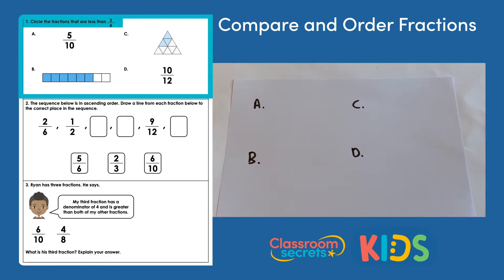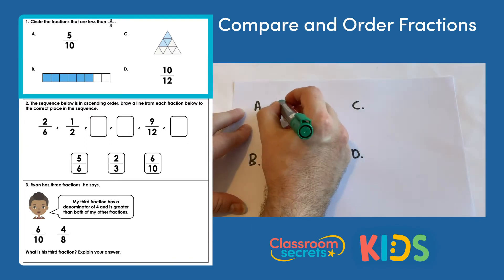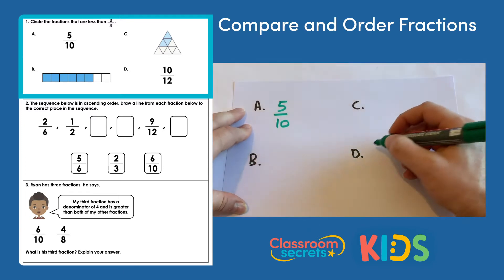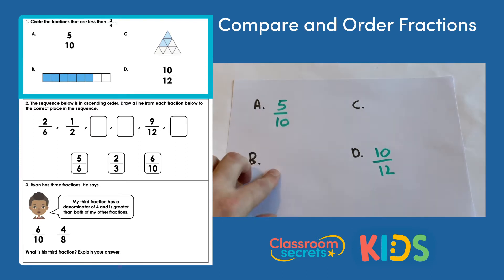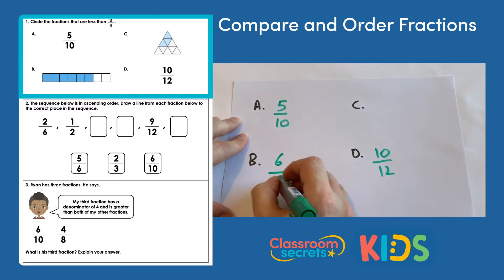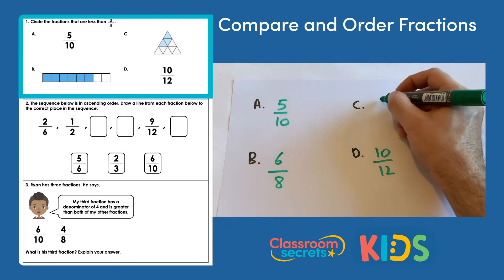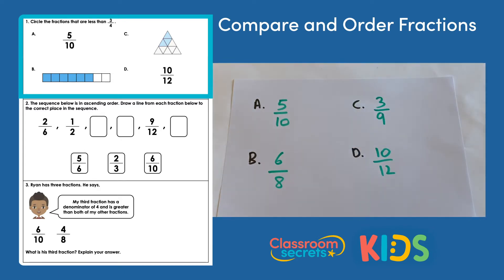Question one says circle the fractions that are less than three quarters. On the sheet we have A, B, C and D. A and D are both given as fractions with a written denominator, so A is five tenths and D is ten twelfths. C and B are represented using images. For B we have six out of eight equal parts shaded in, so that fraction is six eighths. For C we have three out of nine pieces shaded in, so C is three ninths. Those are our four fractions that we need to compare to three quarters.